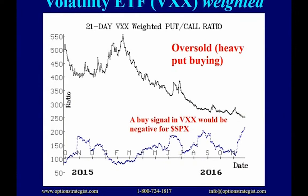Here's VXX, the volatility ETF created by Barclays in 2009. Right now VXX is getting hammered because volatility is going lower — it drops even faster than VIX during a bull market because the term structure of the futures is harmful to it. As a result people are buying puts, pushing the put-call ratio higher. We don't have a buy signal yet — it's in an oversold state — but oversold does not mean buy. When a buy signal does occur for VXX, that would mean volatility goes up, which would be a sell signal for SPX.